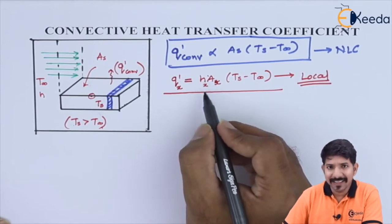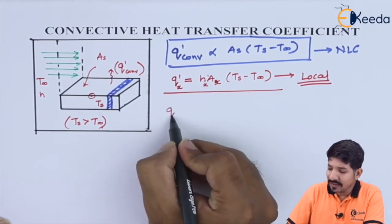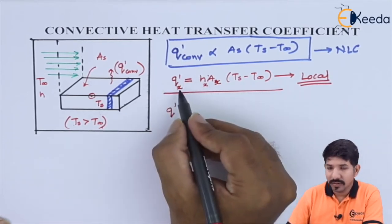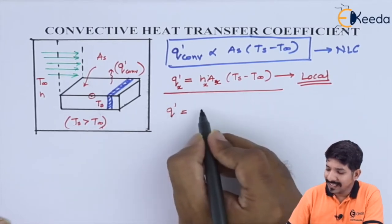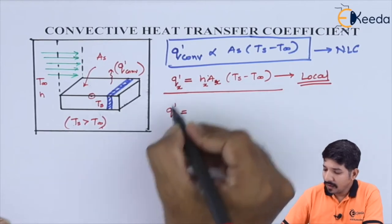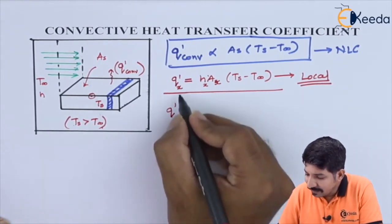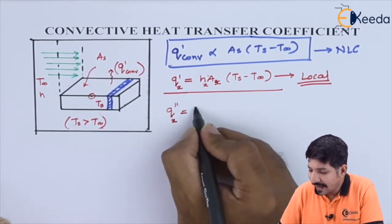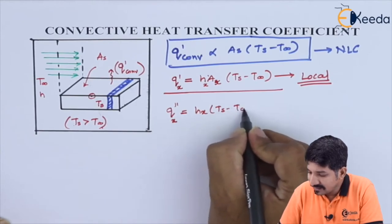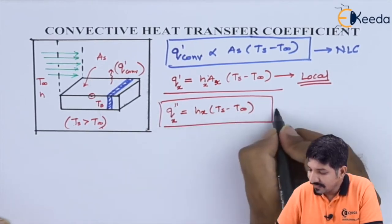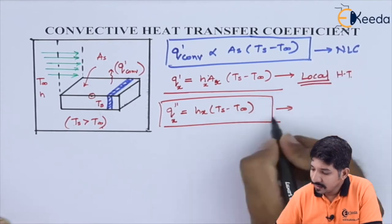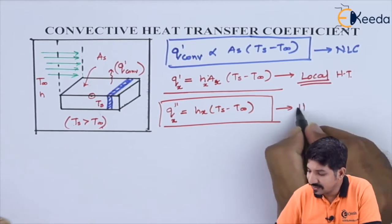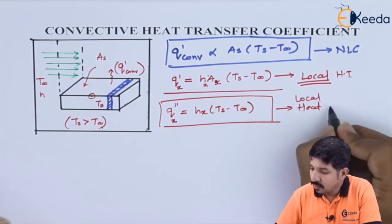To find the total heat transfer, we integrate over the entire area. Writing the local heat flux as Q''x = Hx · (Ts − T∞), these are the local heat flux values at each position along the surface.